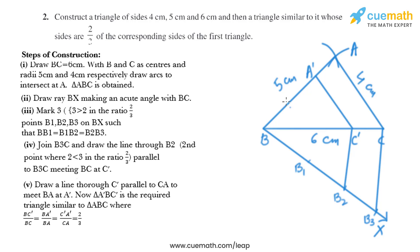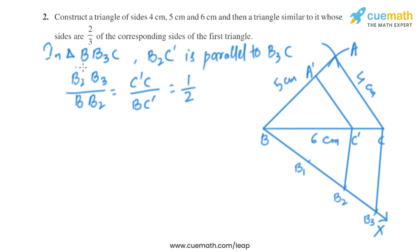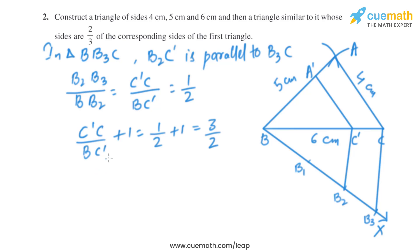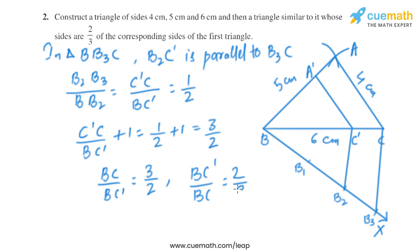We have got triangle A'BC' as the required triangle. Now let's prove this construction. In triangle BB3C, B2C' is parallel to B3C, and from the Basic Proportionality Theorem we get B2B3 divided by BB2 equals C'C divided by BC' equals 1/2. Adding one to both sides, we get BC divided by BC' equal to 3/2, or BC' divided by BC equals 2/3.